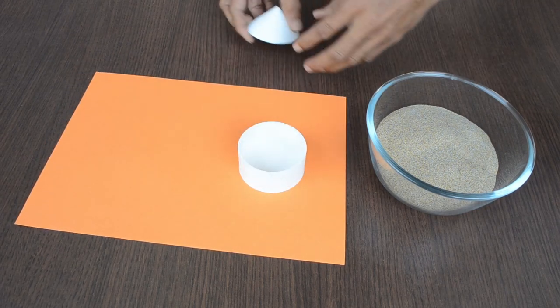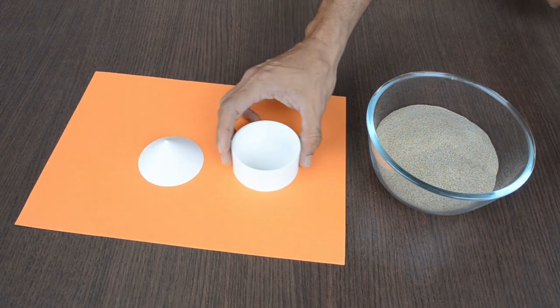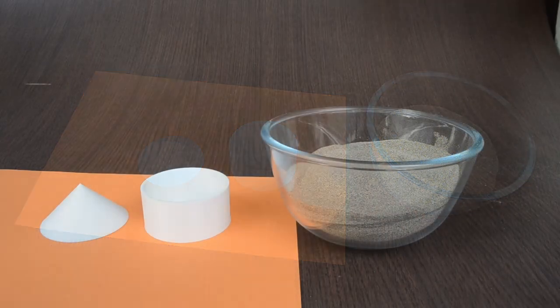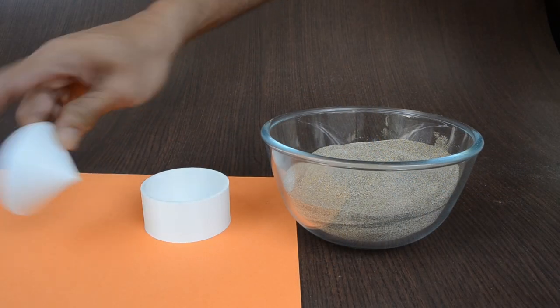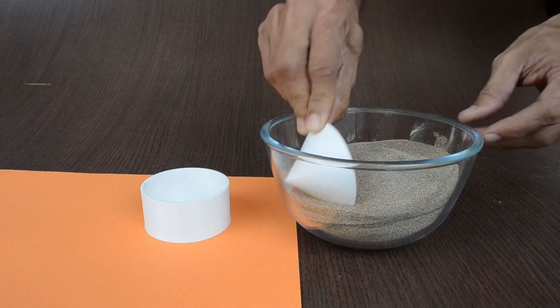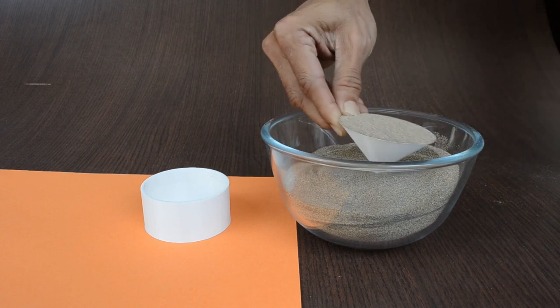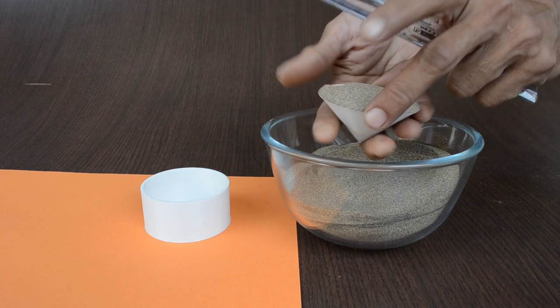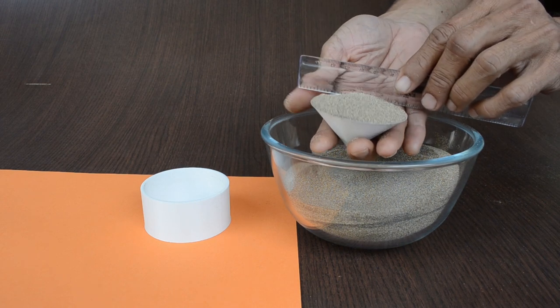Sand spilled during the transfer can be collected on this paper and put back in the container. Let us start with the cone. We will fill it completely, and any excess sand is removed with the help of a ruler.